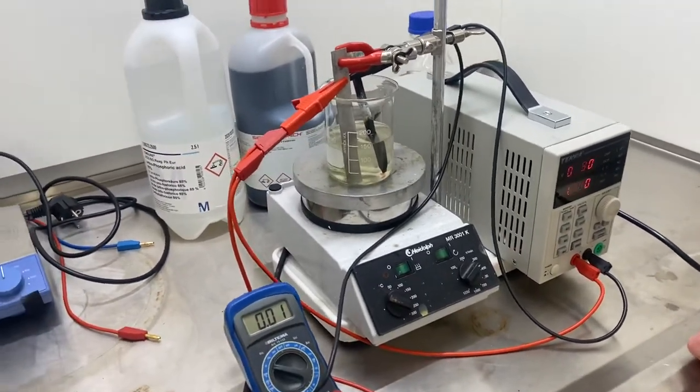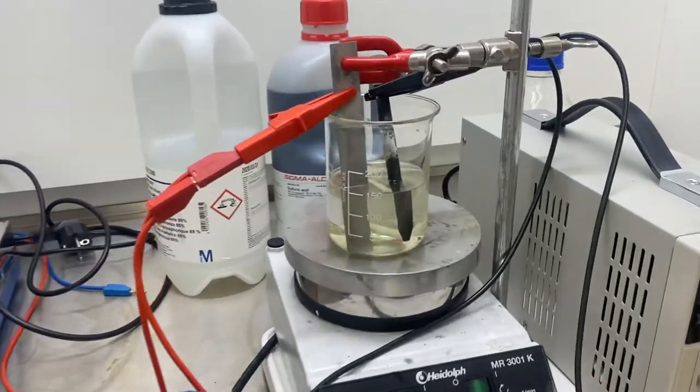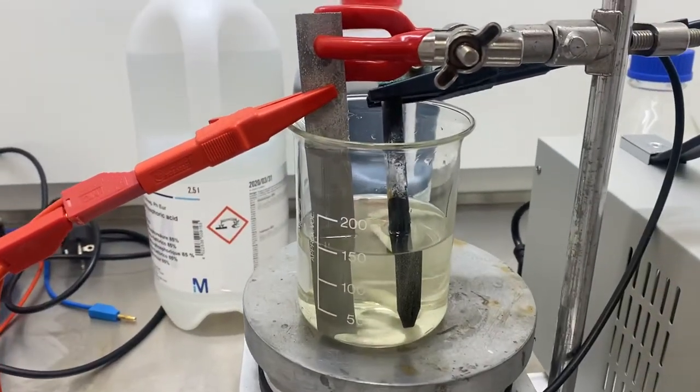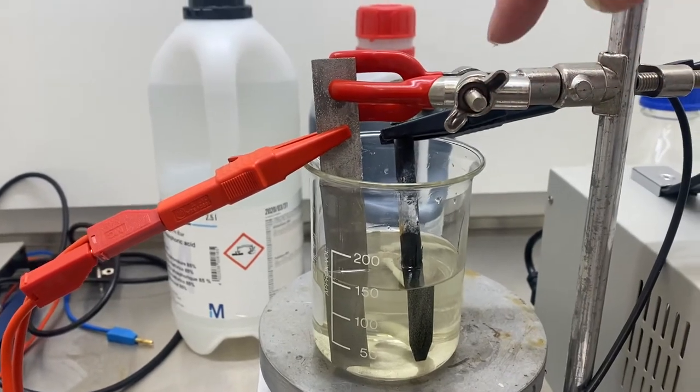In this video we've set up the electropolishing bath. If you remember from the first video, we had the piece of stainless steel. We've now put the stainless steel into the sulfuric acid phosphoric acid mix.